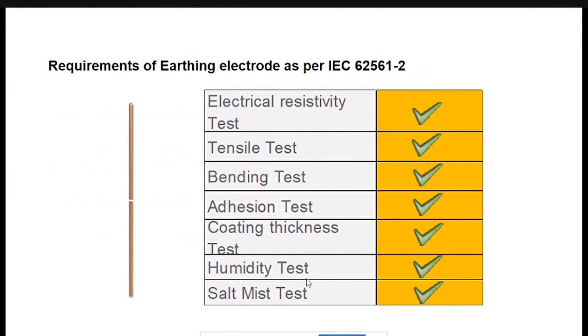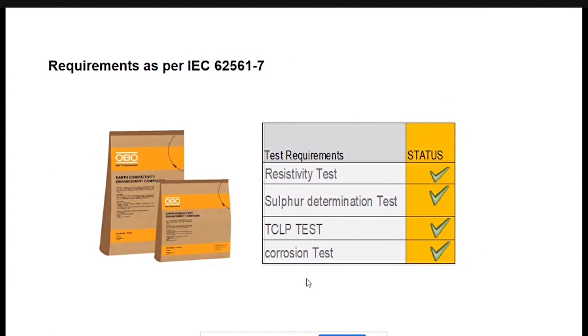When it comes to compound, very importantly any compound can be used provided they have passed the resistivity test, sulfur determination test, TCLP test, and corrosion test. If any one of these is not properly done or if the compound is not sufficient to take the testing, then it is unfit to be provided in the earthing system.